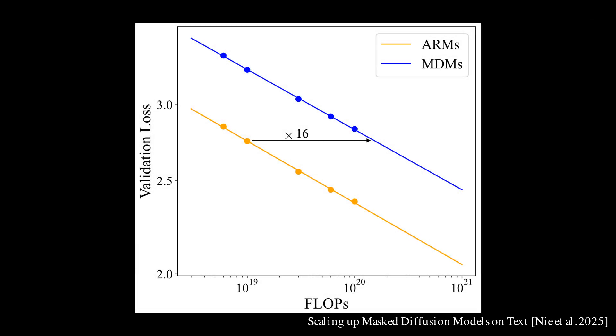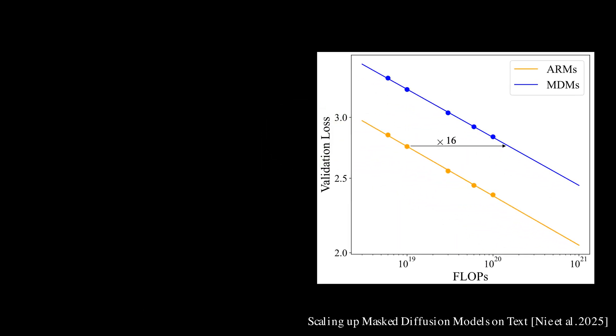However, compared to autoregressive models, diffusion models need approximately 16 times more compute to match the validation loss. Does that mean diffusion models are not as promising as they appear? Not quite. These experiments are conducted using single epoch training, meaning that each data point is seen only once.